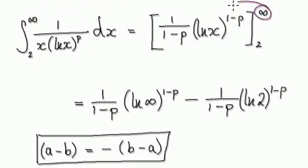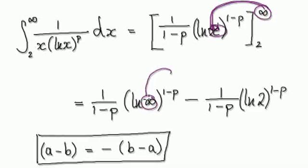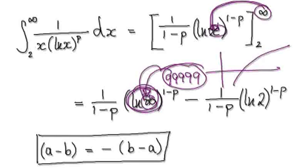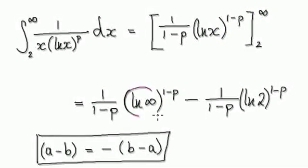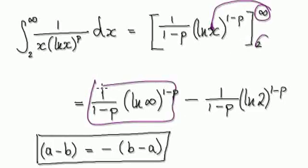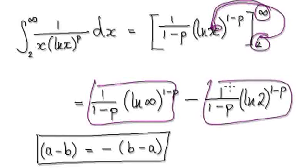Now put this into the integral bounds. Just remember, when we put infinity in here, we're putting a very, very big number in. So the natural log of infinity is infinity. Put infinity into here and that gives you this. Then put the lower bound, two, into here, and that gives you this.